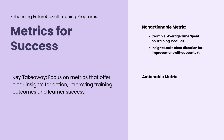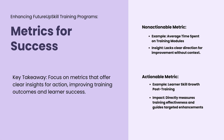An actionable metric, on the other hand, could be learner skill growth post-training. This is a golden metric because it shows you exactly what you're achieving. By measuring skill levels before and after training, you see clear trends — are learners improving? Where are they struggling? This information is actionable because it highlights what's working and what's not, allowing you to make targeted improvements to your training programs.